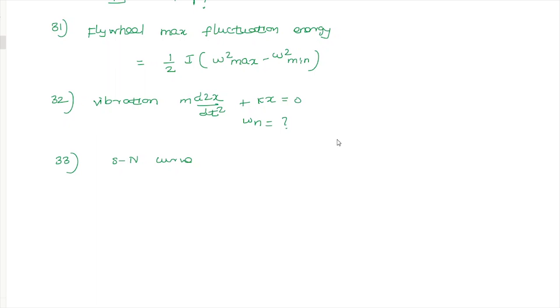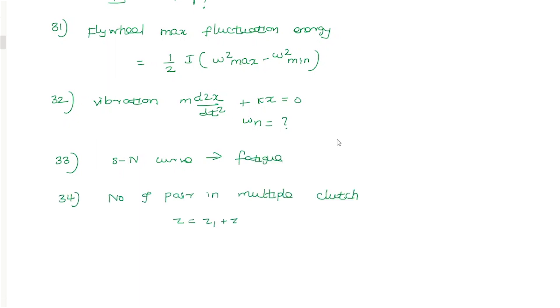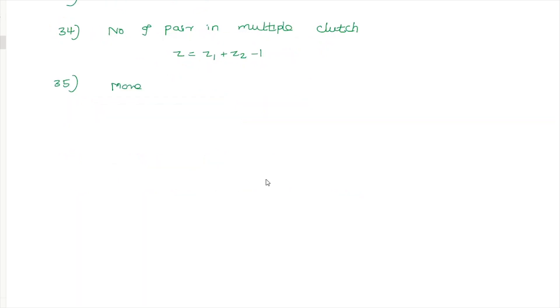The SN curve is related to fatigue, not creep. The number of pairs of friction surfaces in a multiple clutch is Z1 + Z2 − 1.